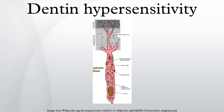At-home treatments include desensitizing toothpastes or dentifrices, potassium salts, mouthwashes and chewing gums. A variety of toothpastes are marketed for dentin hypersensitivity, including compounds such as strontium chloride, strontium acetate, arginine, calcium carbonate, hydroxyapatite and calcium sodium phosphosilicate. Desensitizing chewing gums and mouthwashes are also marketed.